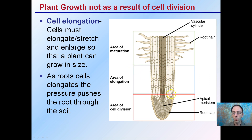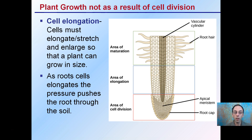Cell elongation occurs — looking at the root, we just talked about the apical meristem. Plant growth here is not as a result of cell division; by elongation, the root is growing with the same number of cells, simply stretching. This allows the plant to grow in size. As root cells elongate, the pressure pushes the root through the soil, and in the apical meristem is where you're getting more cells, and then they'll elongate in this area.